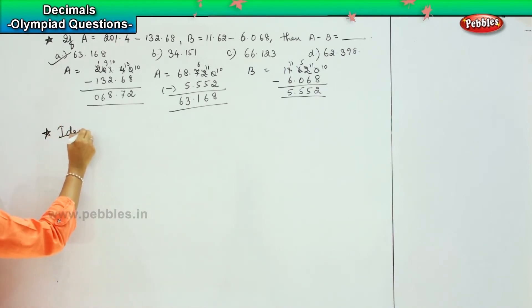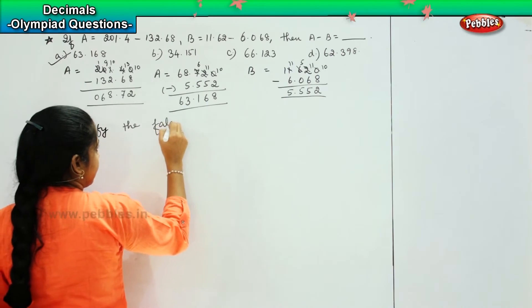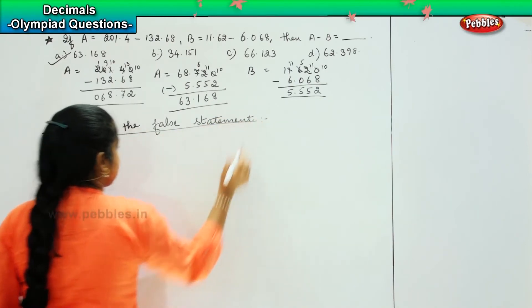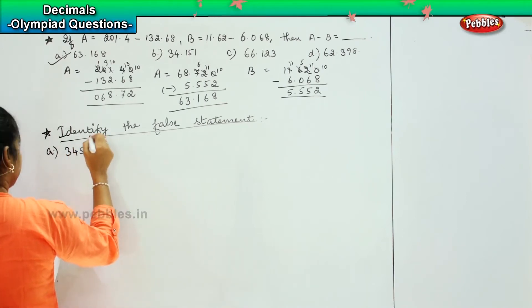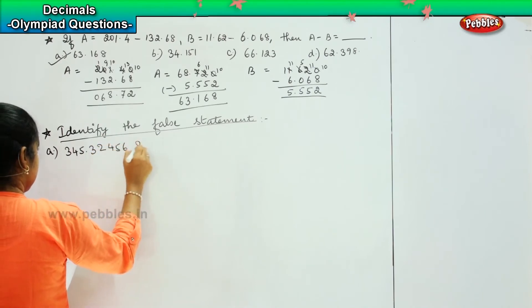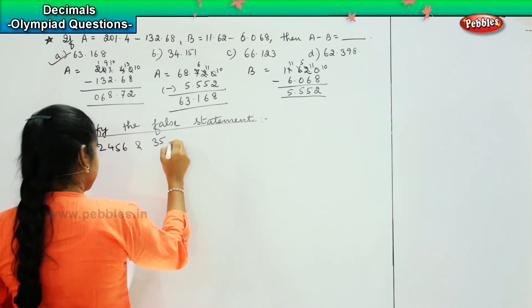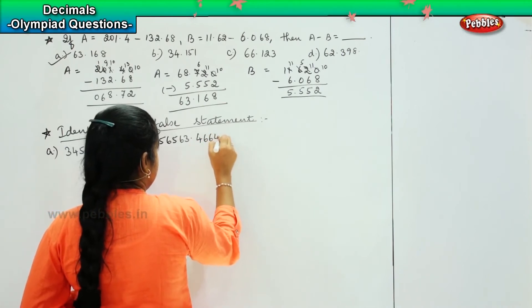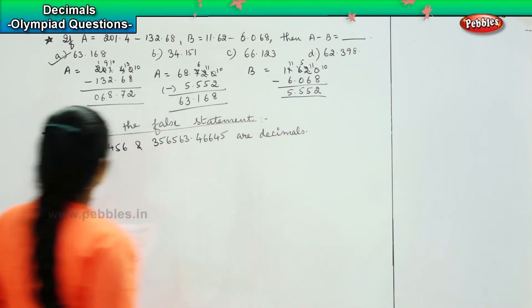Identify the false statement. So option A says 345.32456 and 356563.46645 are decimals.